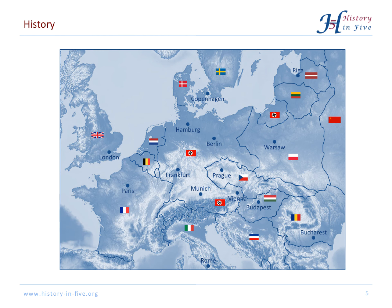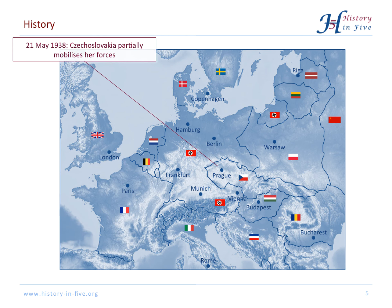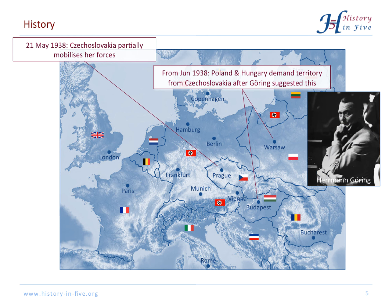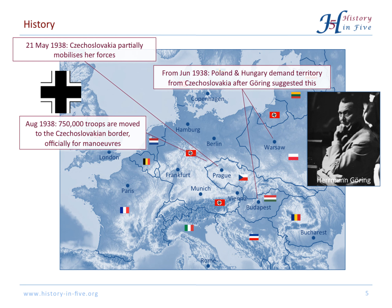The pressure was mounting on Czechoslovakia and the forces were partially mobilized. The pressure mounted even further because Göring persuaded Poland and Hungary to demand territory from Czechoslovakia as well. Then 750,000 German troops moved into position near the Czechoslovakian border — officially that was maneuvers, but everybody understood an invasion was being prepared.